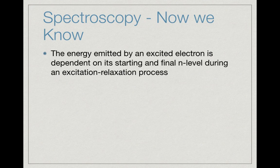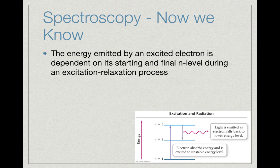Let's step back and go to spectroscopy. We talked about how energy is emitted by an excited electron and looked at that excitation and relaxation process. Excitation is the absorption of energy; relaxation is the letting go of that energy. We see an electron at n equals 1 absorbing energy and going up to n equals 3, then releasing energy from n equals 3 to n equals 2—it's this transition that gives us light in the visible range.